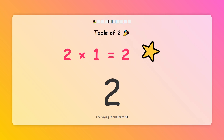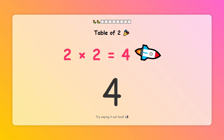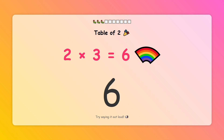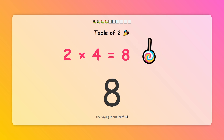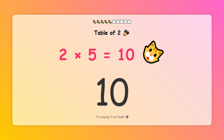2 times 1 equals 2. 2 times 2 equals 4. 2 times 3 equals 6. 2 times 4 equals 8. 2 times 5 equals 10.